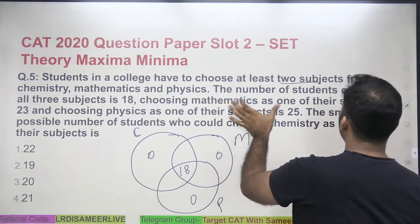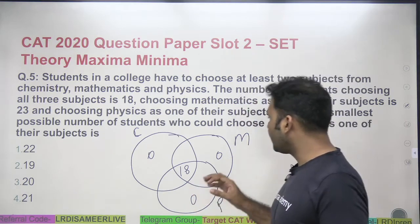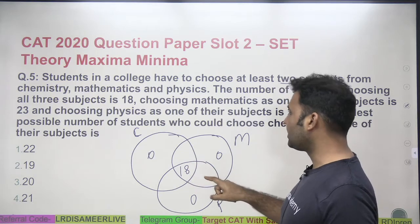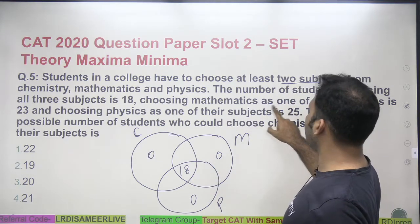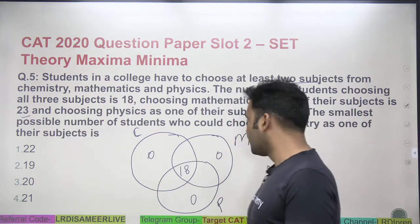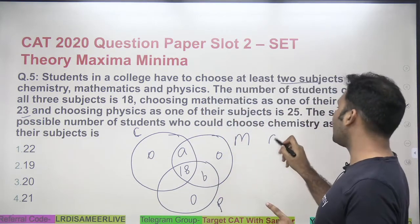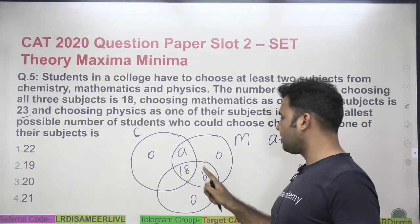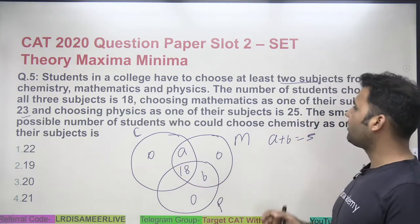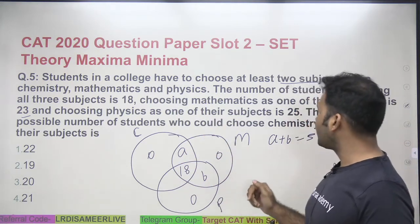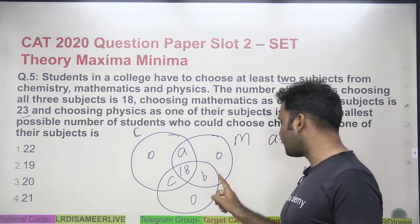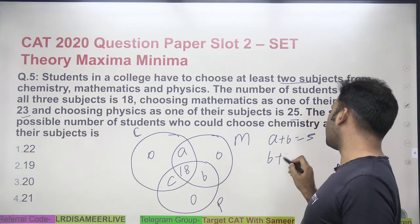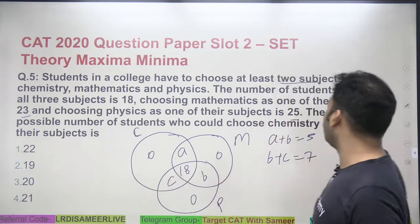Students choosing mathematics as one of their subjects includes those in the pairwise and triple overlaps — it is given as 23. If the mathematics-only-pair regions are a and b, then a + b + 18 = 23, so a + b = 5. Students choosing physics as one of their subjects is 25. If the physics-only-pair region is c, then b + c + 18 = 25, so b + c = 7.